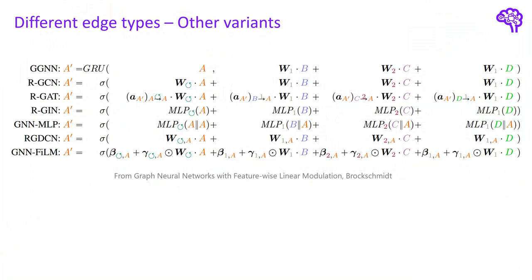For including different edge types, other similar papers exist, but I think you get the point how this can be handled. I found this overview in the GNN FiLM paper, which provides a nice summary. It shows how different node features A, B, C, D are multiplied with separate weight matrices. The little arrow that appears in the index of some weight matrices stands for self-loops.